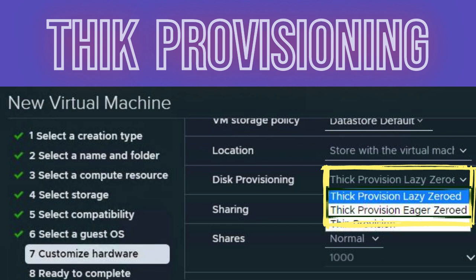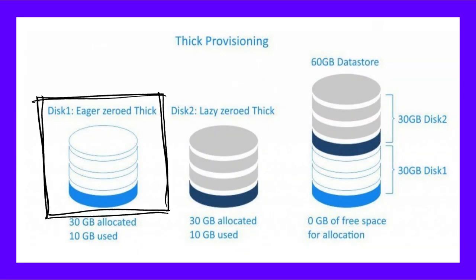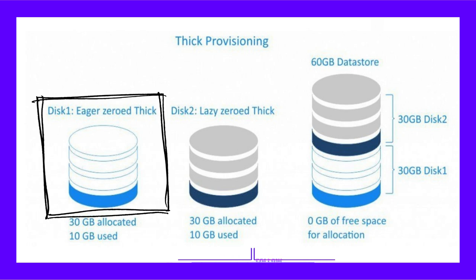There are two subtypes of thick provisioned virtual disks: a lazy zero disk and an eager zero disk. An eager zero disk gets all of the required space at the time of its creation, and the space is wiped clean of any previous data on the physical media. Creating eager zero disks takes longer because zeros are written to the entire disk, but their performance is faster during the first writes. This subtype of thick provisioned virtual disk supports clustering features, such as fault tolerance.